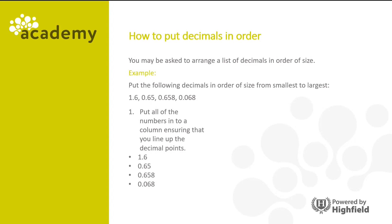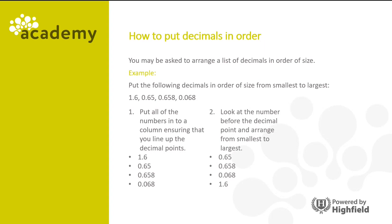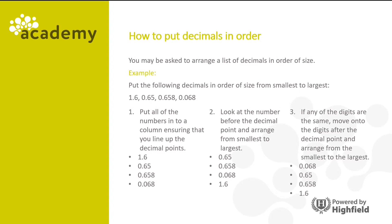The first step is to put all the numbers into a column, ensuring that you line up the decimal points. The second step is to look at the number before the decimal point and arrange from smallest to largest. And if any of the digits are the same, move on to the digits after the decimal point and arrange from smallest to largest. So here we can see that 1.6 is the largest, 0.658 is slightly bigger than 0.65 and 0.068 is the smallest.